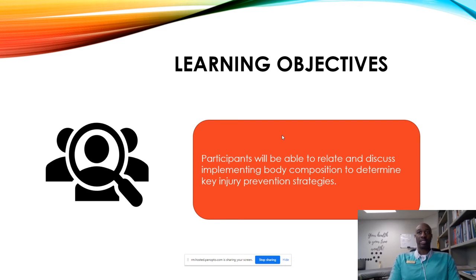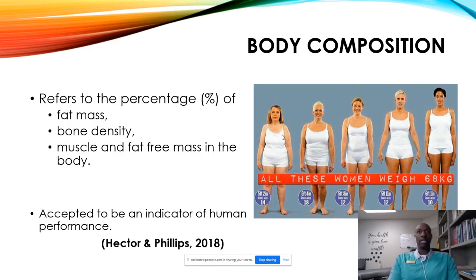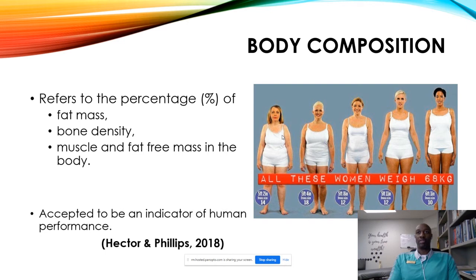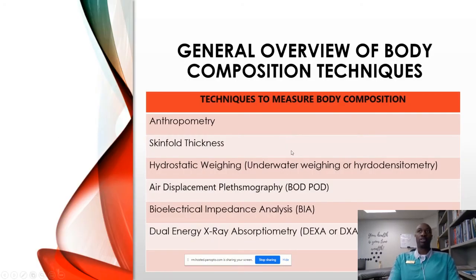Body composition has to do with the fat mass, the bone density, as well as the muscle tissue in the body — that's the general answer. It's accepted as a key indicator for human performance. To your right you'll notice all bodies may have the same weight; however, each one of the females shown has a different body composition. Even though it's a group of females at 68 kilograms, the leg girth, waist girth, as well as the ratio of fat-free mass to fat mass is very different.